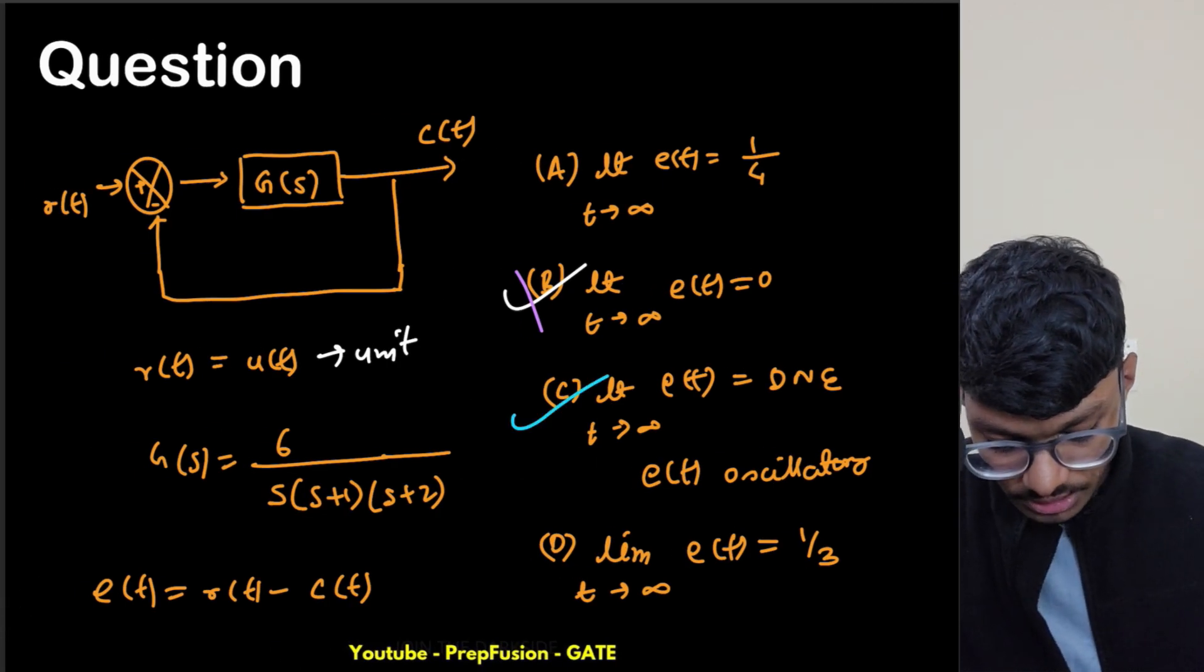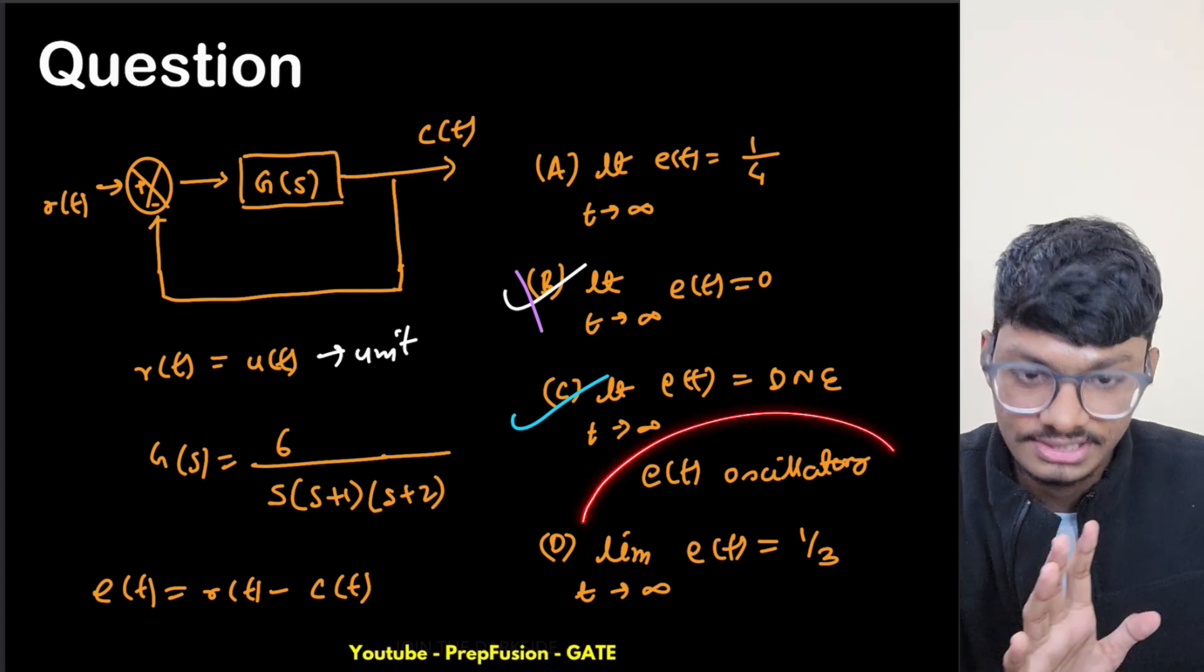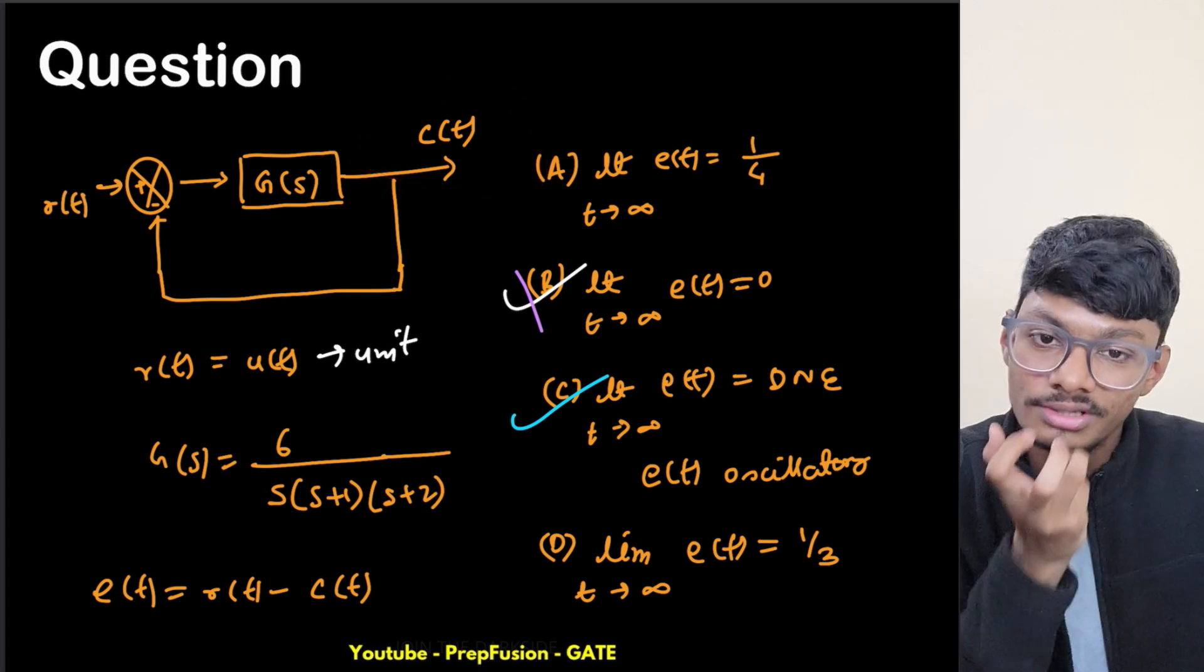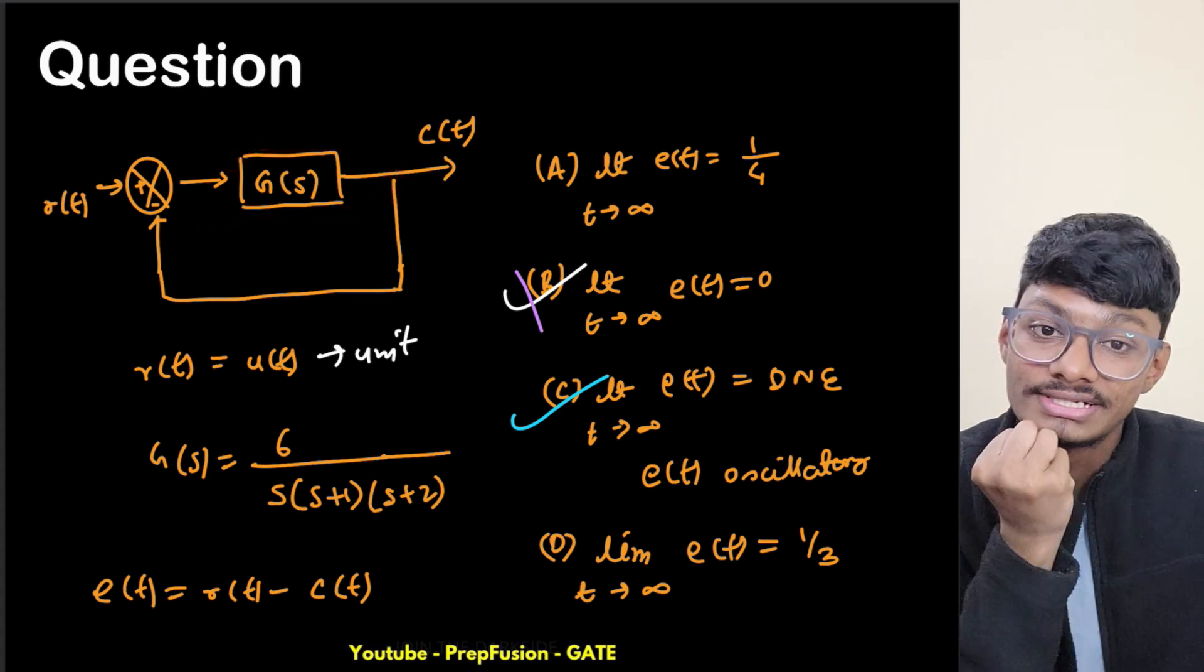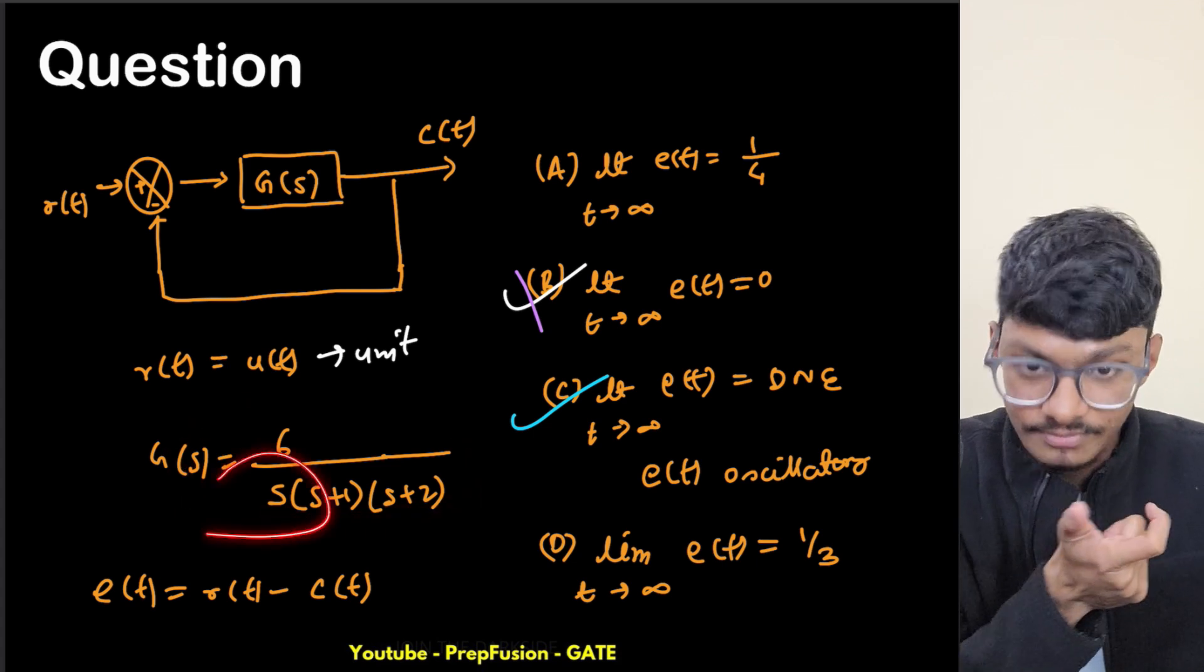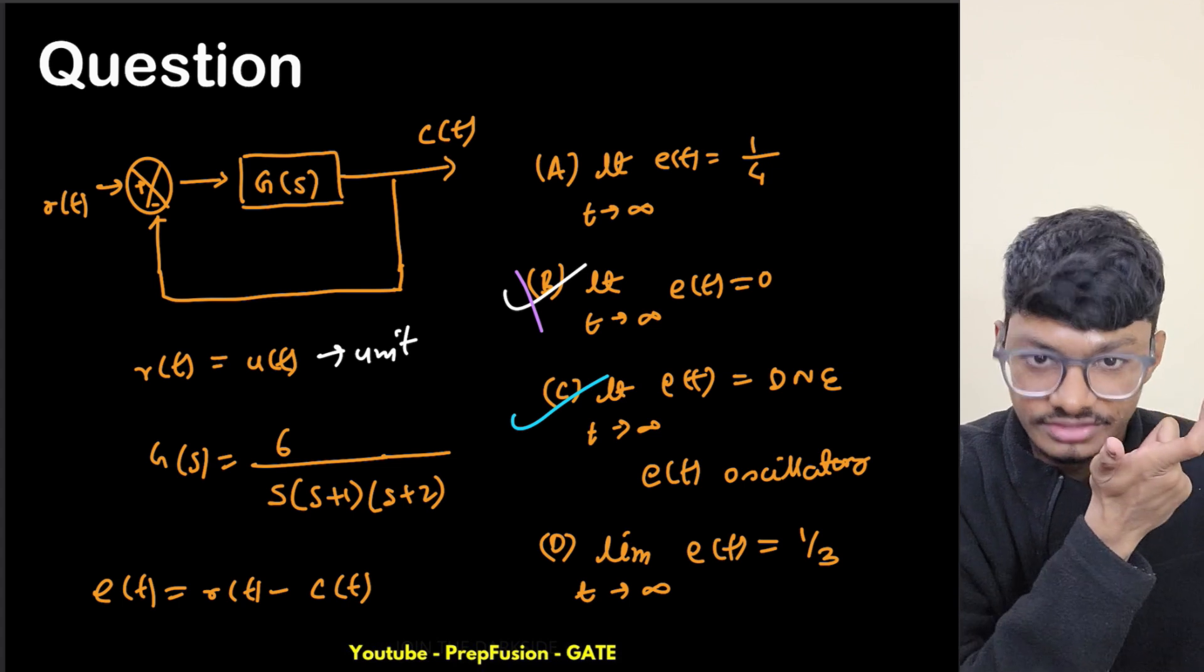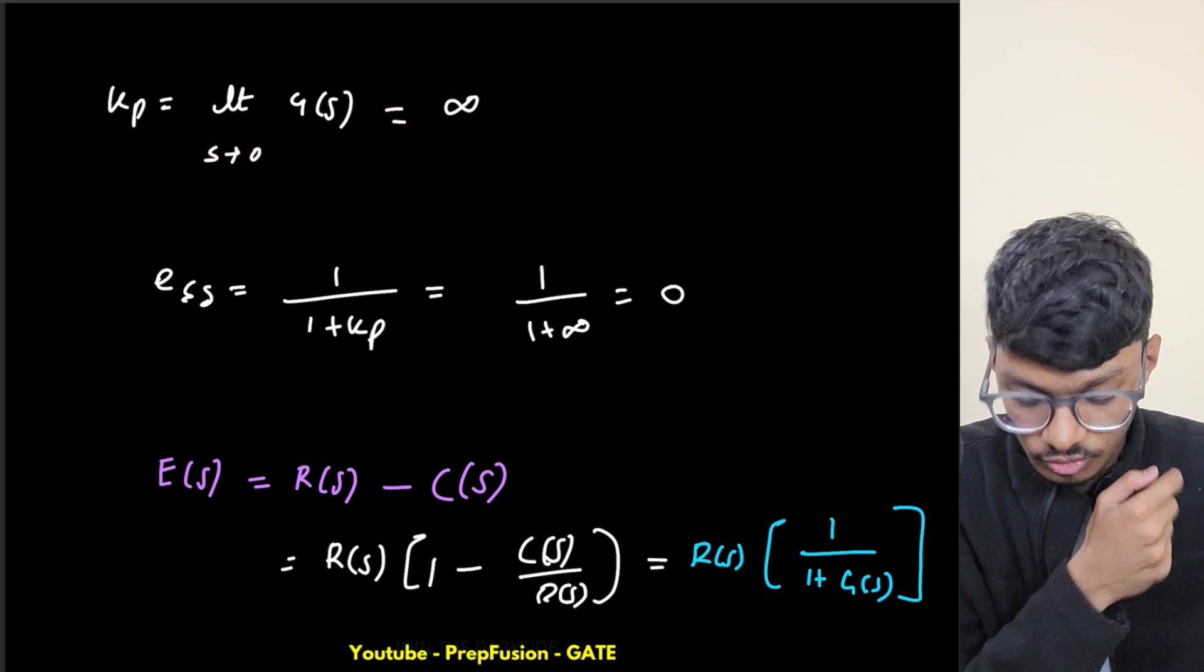So my correct answer to this question will be C. The steady state value of the error signal will not exist here. My e(t) will oscillate. The error signal will always oscillate because the response itself is not stable. Always be careful about this type of question. You just see it's type 1 system and simply use that error coefficient formula like s·G(s), s tends to zero gives infinity, hence you put steady state error zero.